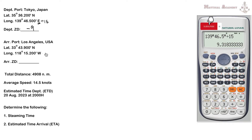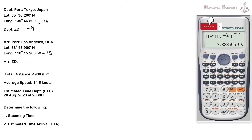For the arrival port, Los Angeles, we divide 118°15.2' by 15, which gives 7.88, rounded to the nearest whole number: 8. Since Los Angeles is in westerly longitude, the sign of the zone description is positive, so ZD = +8. We now have the zone descriptions for both the departure and arrival ports.